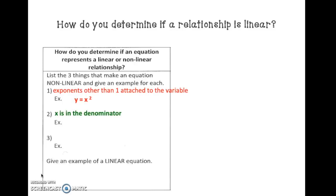Number 2: x is in the denominator. For example, y is equal to 3 divided by x — x is in your denominator. Number 3: x and y are multiplied together. For example, x times y is equal to 10.